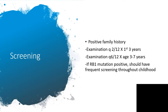For screening: when there is positive family history of retinoblastoma, any offspring of the affected individual should be examined every two months for the first three years. Then after three years, it's going to be every six months until the child will be seven. If the retinoblastoma 1 mutation is positive, the individual should have frequent screening throughout childhood.